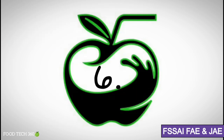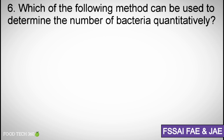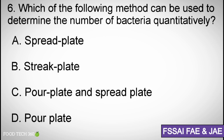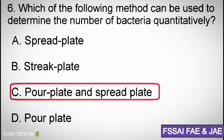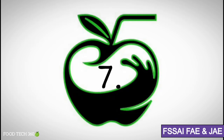Question number 6. Which of the following methods can be used to determine the number of bacteria quantitatively? A. Spread plate, B. Streak plate, C. Pour plate and spread plate, D. Pour plate. Correct answer: C. Pour plate and spread plate.